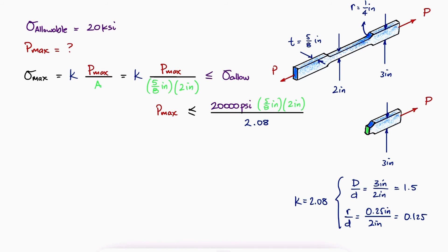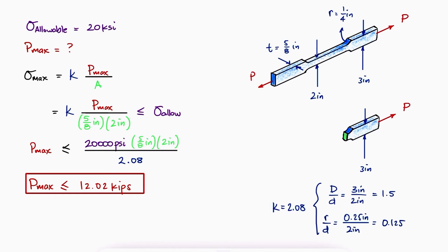With this information, we can evaluate for a maximum load P of 12.02 kips.